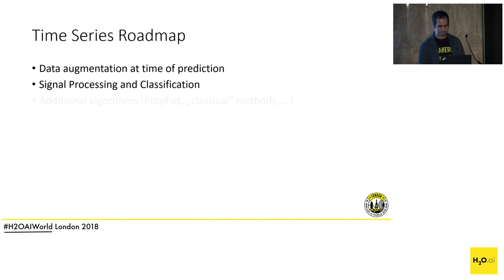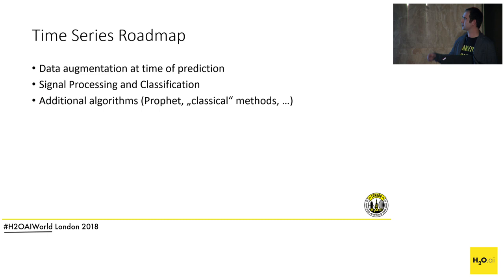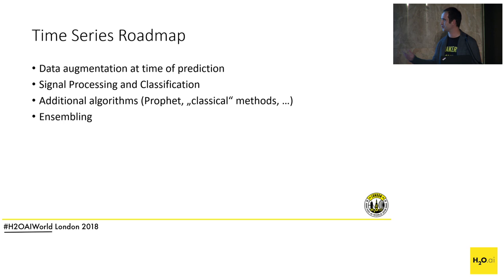We will also add more algorithms, like Prophet from Facebook — we already have it implemented and are just waiting for the license to change, which should happen soon. We'll also add classical methods like ARIMA. Currently Driverless AI relies heavily on gradient boosting, which is fine for many datasets but not optimal for all. Bringing these together and ensembling them will also be an option.